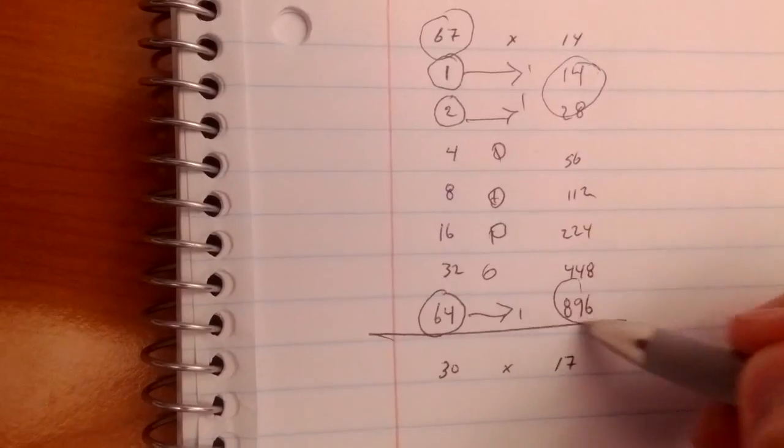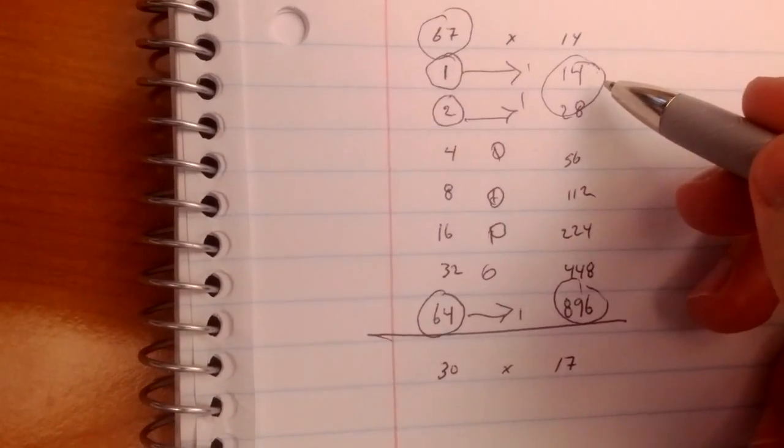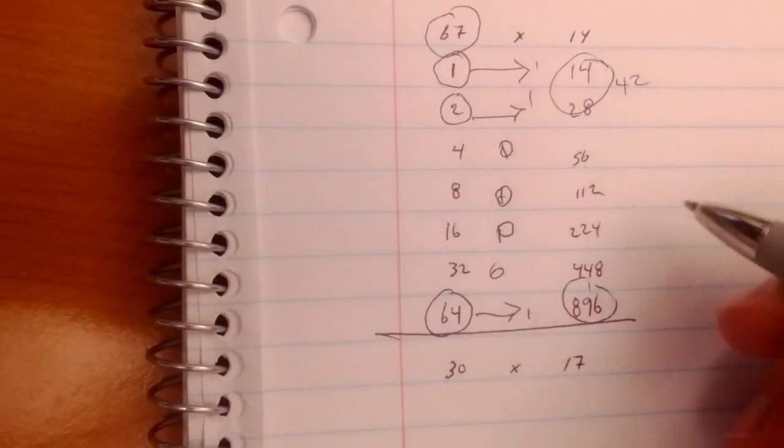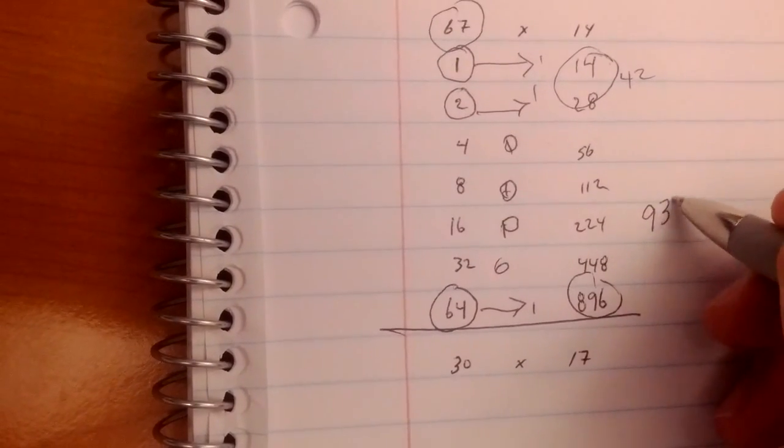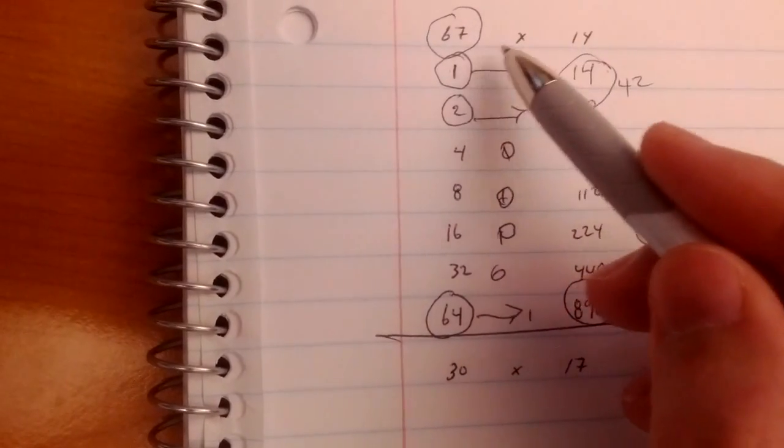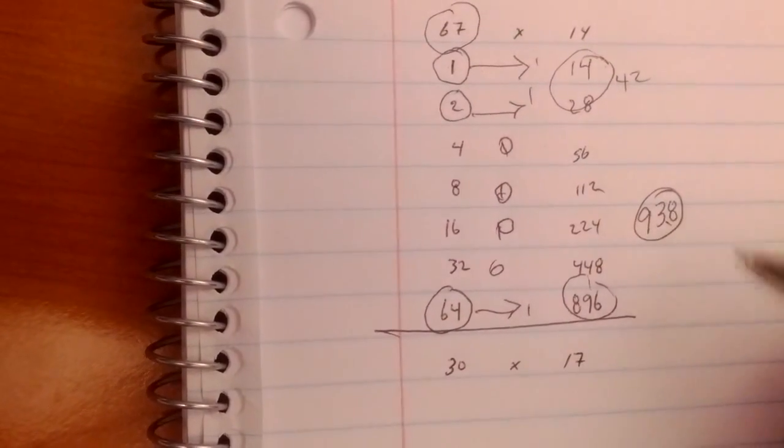These two plus this one: 14 and 28, you've got 42, 42 plus 896, and you've got 938. If you multiply 67 times 14, your answer is 938.